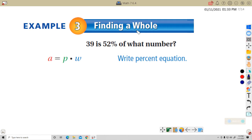Example 3: Now we're going to find the whole. 39 is 52% of what number? The 'is' means equals, 'of' what number tells us that the whole is unknown. It's going to be unknown. So 39 equals 52%, so 0.52 times our unknown whole. We set it up, now we just solve. I'm going to divide both sides by 0.52.